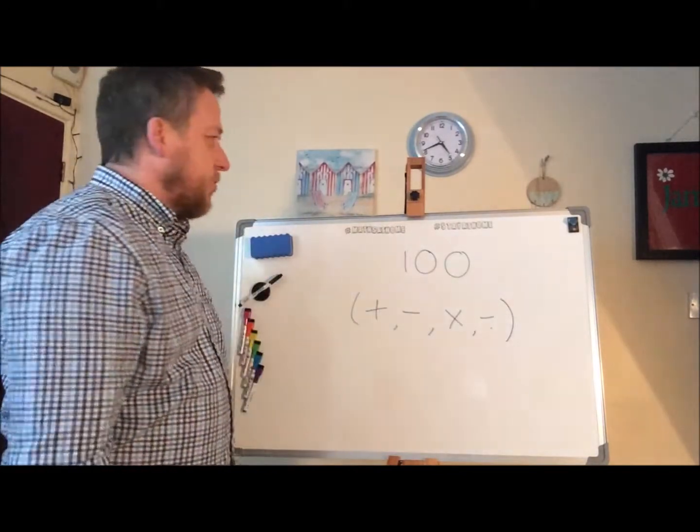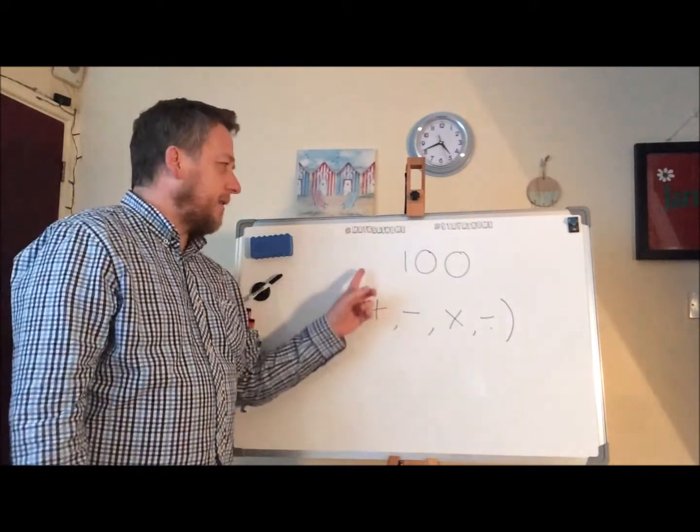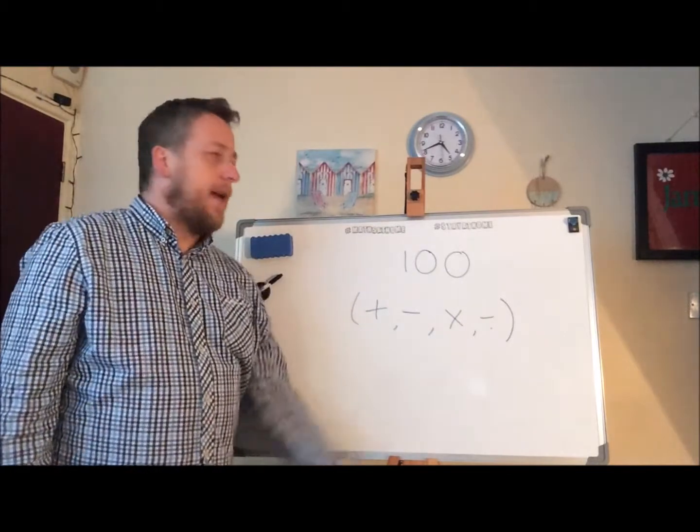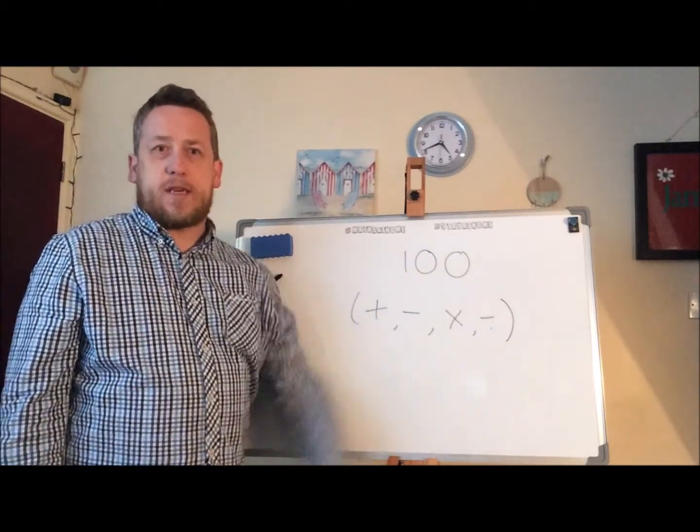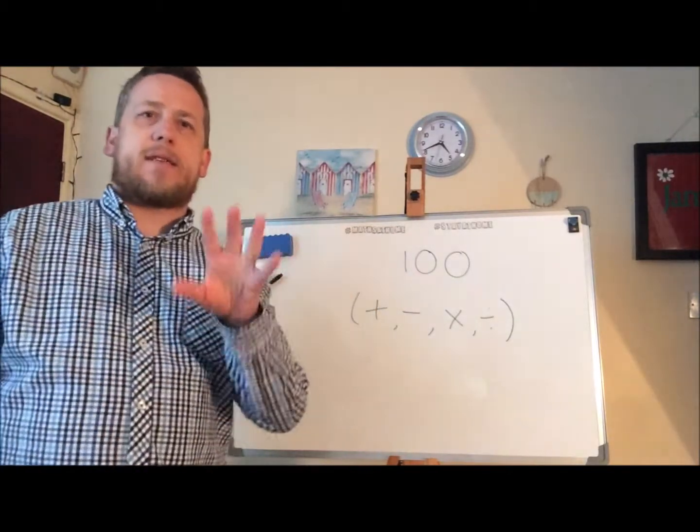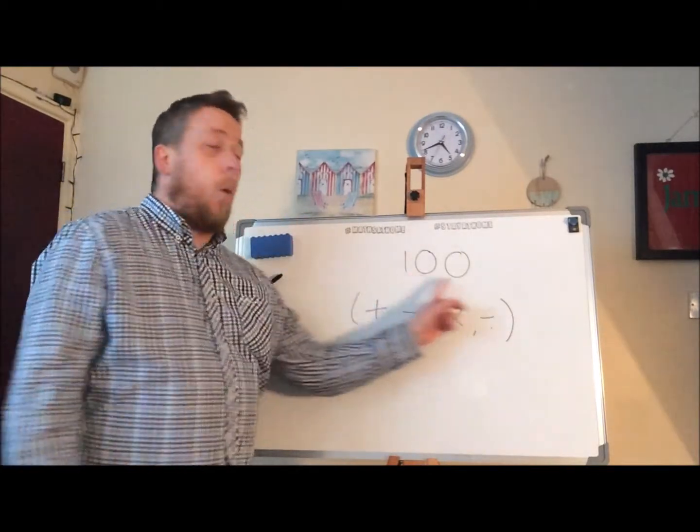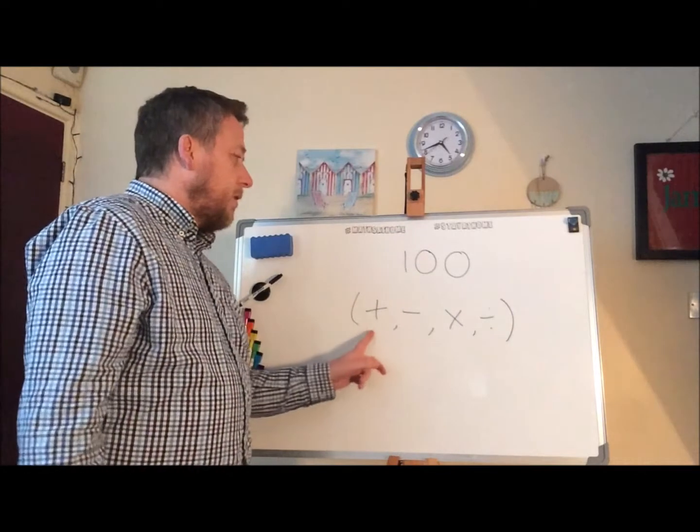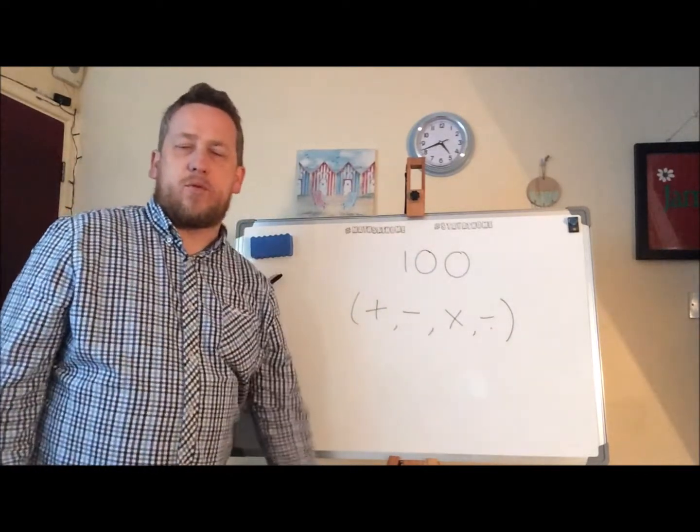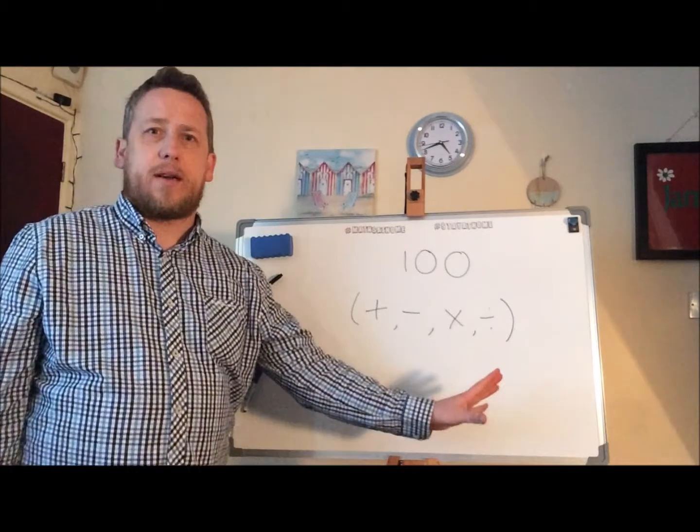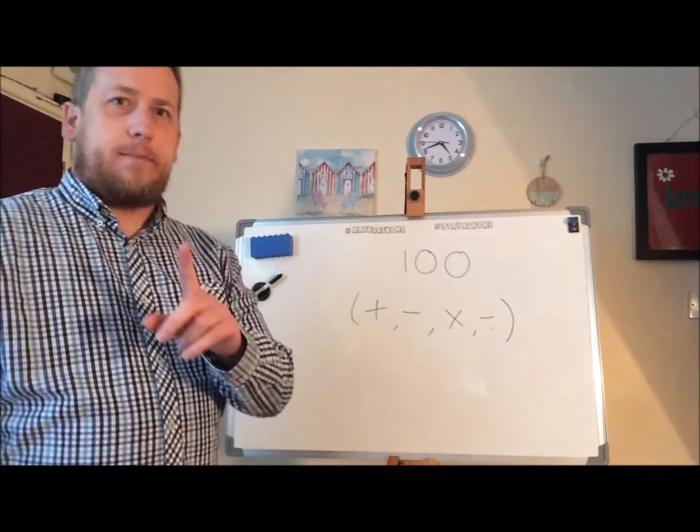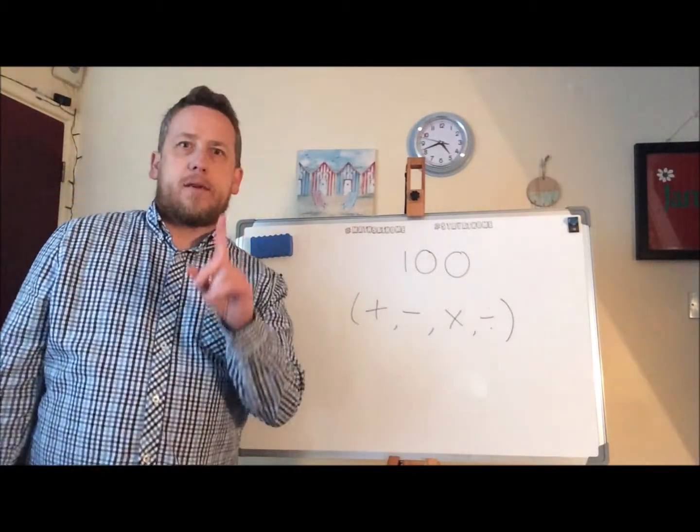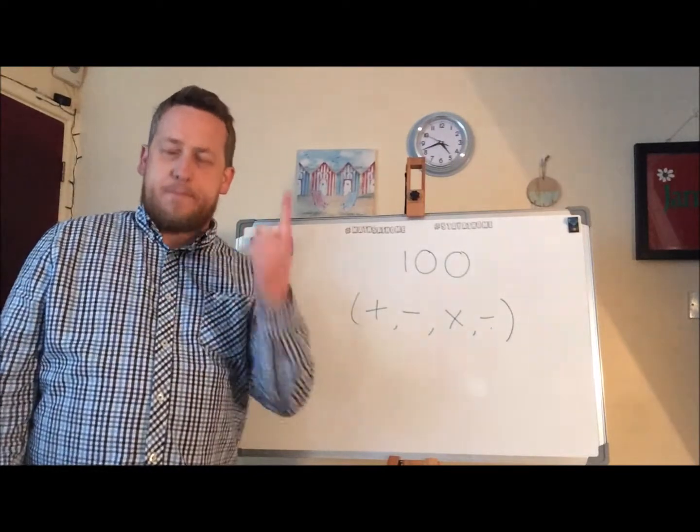Okay, here we have puzzle two for today. As you can see, I have got the number 100 here. This is going to be your target. You are going to be given the task to make 100. Here's the condition then. You can use any of the mathematical symbols on the board as many times as you like. However, you are only allowed to use the same number.